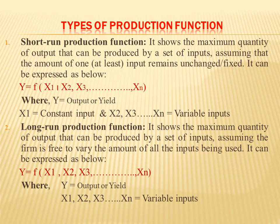The long-term production function may be expressed and written as: y is a function of x1, x2, and xn. As you can see here, none of the variables is constant — none of the inputs is constant. All inputs are variable inputs.